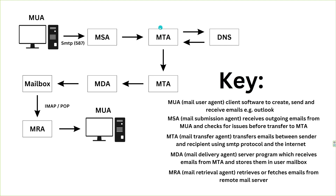Once the email reaches the front of the queue, the MTA does a DNS query to determine which other MTA to send it to. It gets a mail exchange record back, which gives it a list — or sometimes just one entry — of where to send the email. If there are multiple MX records, it goes in order of priority: the highest priority is the lowest number. It keeps going until it receives a hit on the correct MTA server.